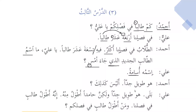Ahmadu huwa tawilun jiddan — he is very tall. Tawilun is mawsuf, jiddan is sifah — he is very tall. Or jiddan is also used as a dharf as well — he is really tall or he is very tall. In fact, tawilun is an adjective and jiddan is dharf. And we know that dharf is always used as mansoob; it will always be nasb.